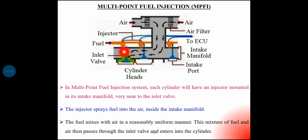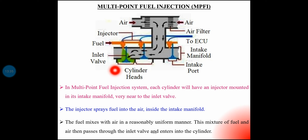The injector is located in the intake manifold near the inlet valve. Fuel is injected into the air inside the intake manifold. The air-fuel mixture then passes through the inlet valve and enters the engine cylinder.